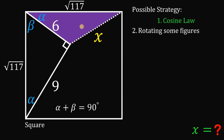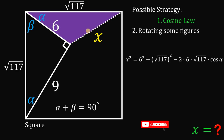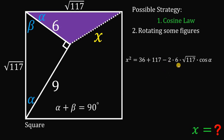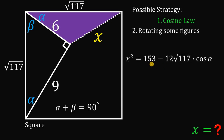Now, using this triangle, we can apply the cosine law, which states that the square of a side of a triangle equals the sum of the squares of the remaining sides minus twice the product of those sides and the cosine of the angle between them. So: x squared equals 6 squared plus square root of 117 quantity squared, minus 2 times 6 times square root of 117 times cosine of alpha. Simplifying: 6 squared is 36, square root of 117 squared is 117, and 2 times 6 is 12. So 36 plus 117 gives us 153.